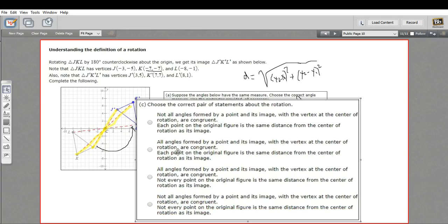So let's go on to the second one. The second one says, all angles formed by a point in its image with the vertex at the center of rotation are congruent. Okay. That's what we found in that first part. And then it says,